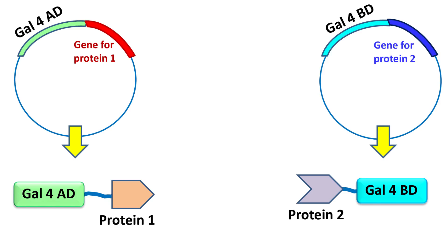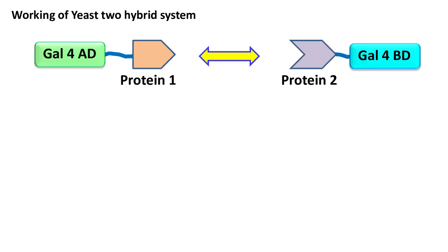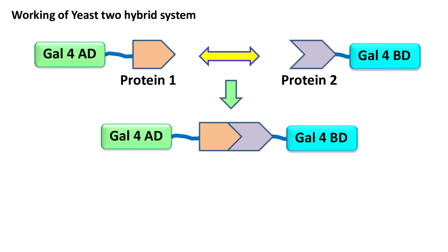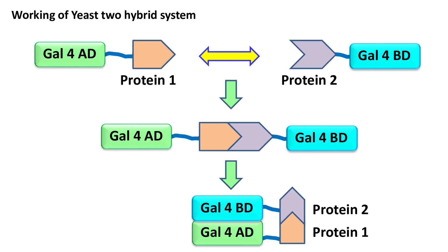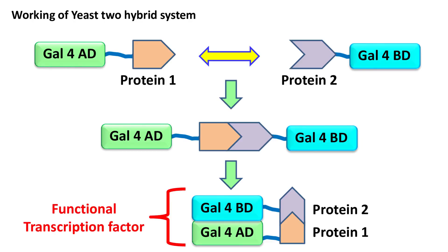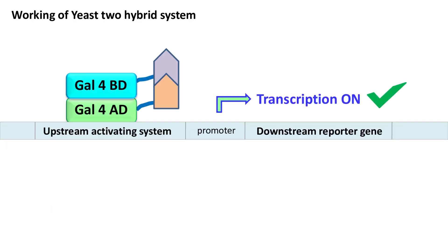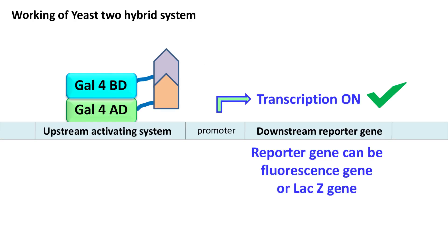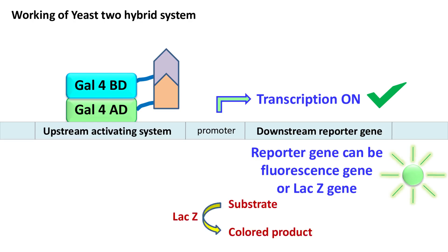Now here comes an interesting part. If protein 1 and protein 2 interact, then Gal4 AD and Gal4 BD will come close to each other and form a functional transcription factor. This will switch on the transcription of the downstream reporter gene. The reporter gene can either be a fluorescence gene — which produces a fluorescent protein detected under a fluorescence microscope — or a gene like the LacZ gene, which uses a specific substrate to form a colored product.